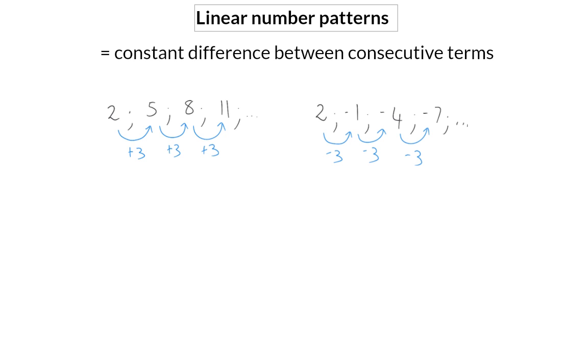This is summed up by the formula for constant difference, which is T2 minus T1. The difference between the first two terms will be the same as T3 minus T2, or even the same as Tn minus Tn minus 1.